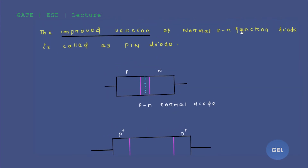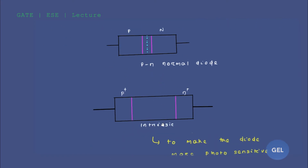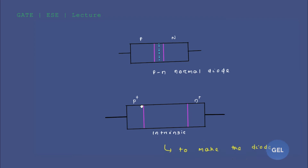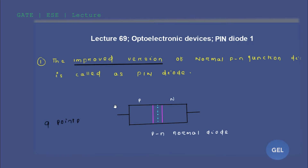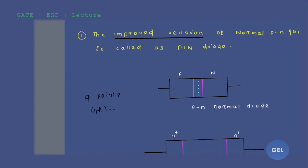So basically, the PIN diode is the improved and upgraded version of the normal p-n junction diode. Now let's get into nine important points. There are many beautiful concepts in the PIN diode, but I have considered only nine important points which will be valuable for your GATE and ESC exams.